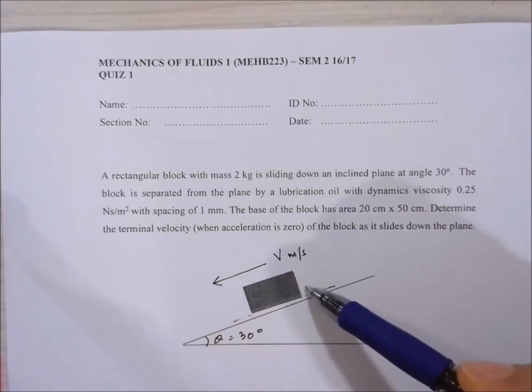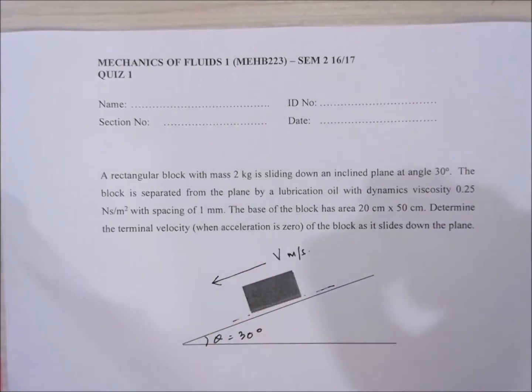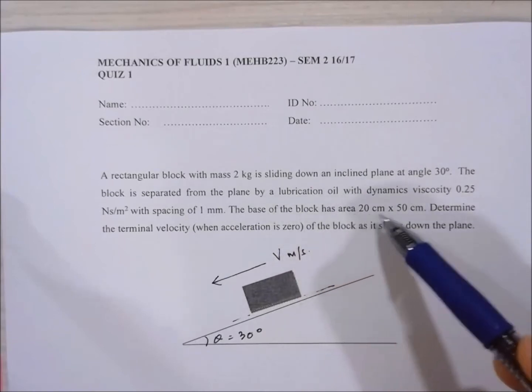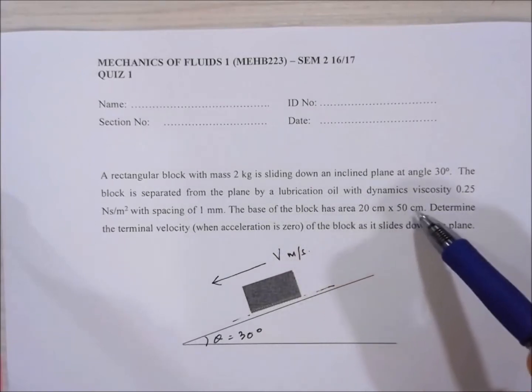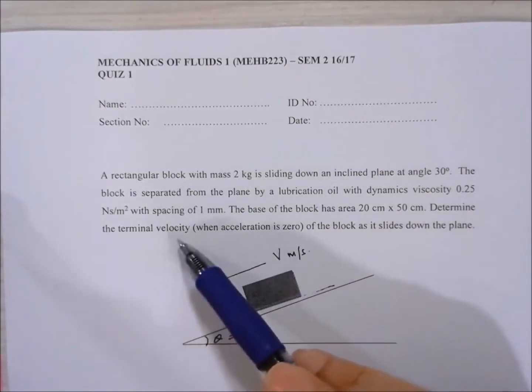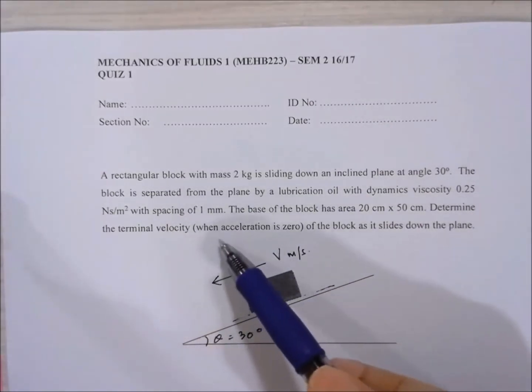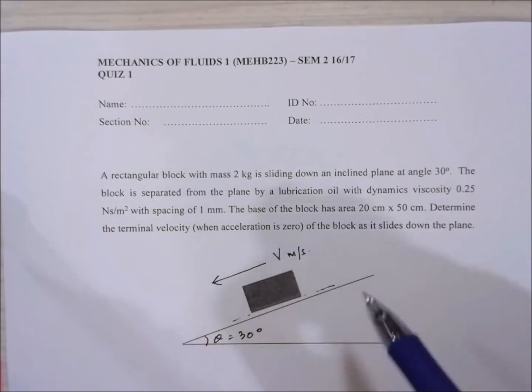The base of the block has area of 20 cm by 50 cm and we are asked to determine the terminal velocity, which is when the acceleration is zero, of the block as it slides down the plane.